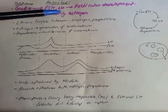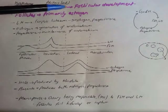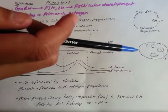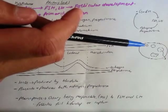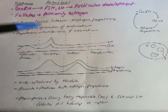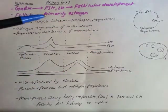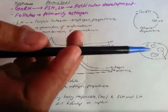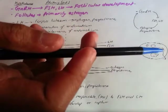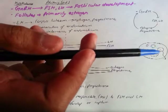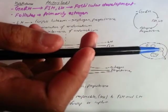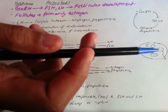FSH and LH combined influence follicular development in the ovary. Here is a picture of our ovary showing the development of one follicle. Due to the effect of FSH and LH, this one follicle keeps developing, and once it reaches maturation it releases the egg.